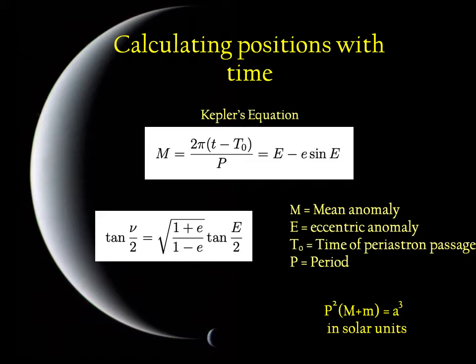Once you solve for the eccentric anomaly, then you can plug it into the second equation down there, which is analytic. You just take an arc tangent and you can get the true anomaly. So now we know how the true anomaly evolves with time. It's defined implicitly by these two equations.